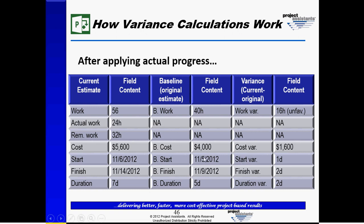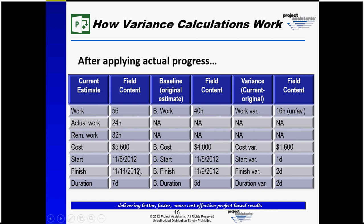The task was scheduled to start on November 5th. It was changed to November 6th, generating a one-day unfavorable variance, meaning it started a day late. And the finish date was moved from the 9th to the 14th, generating a two-day variance. It looks like more than two days, but in this case this falls across a weekend.